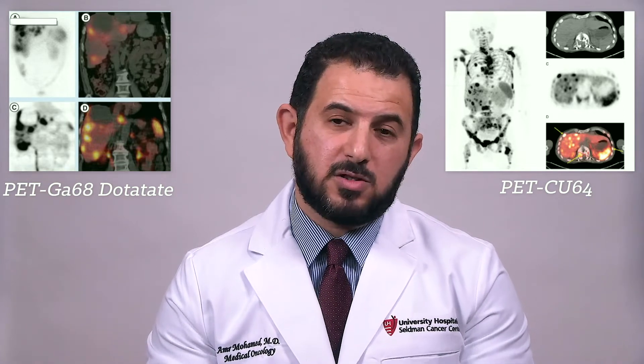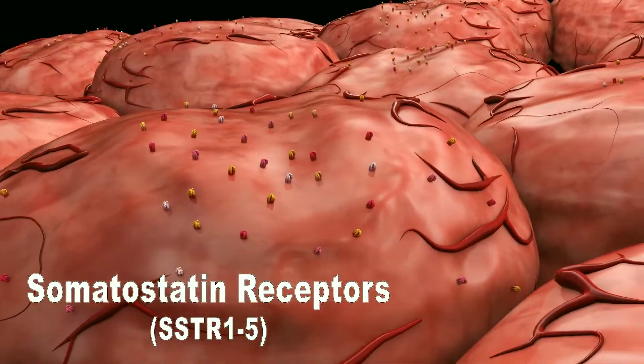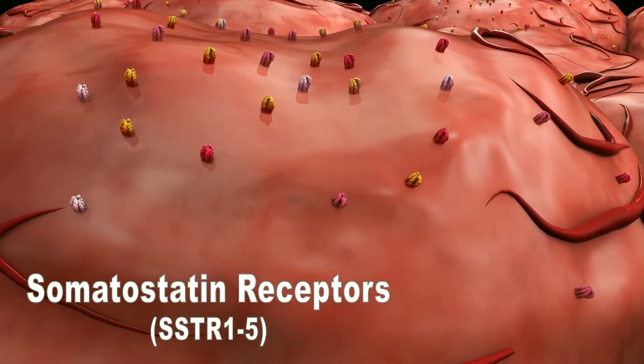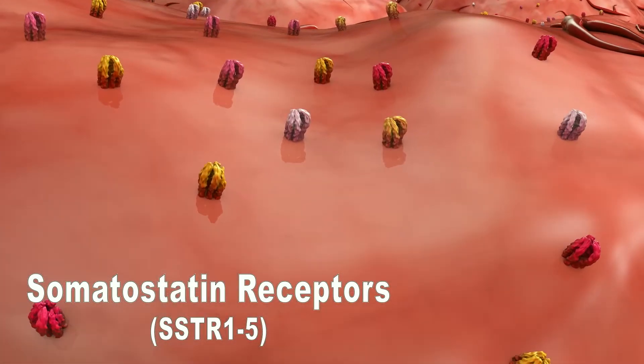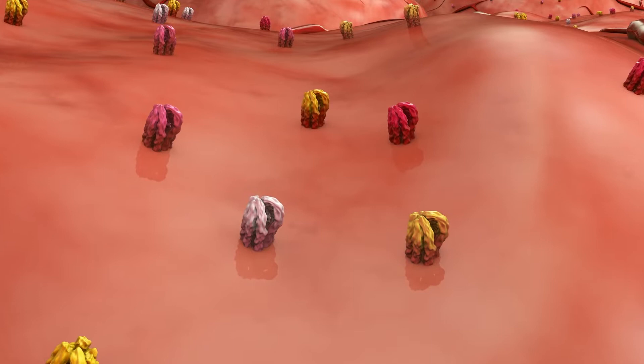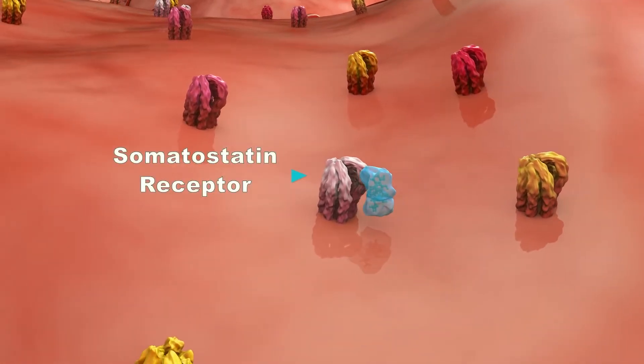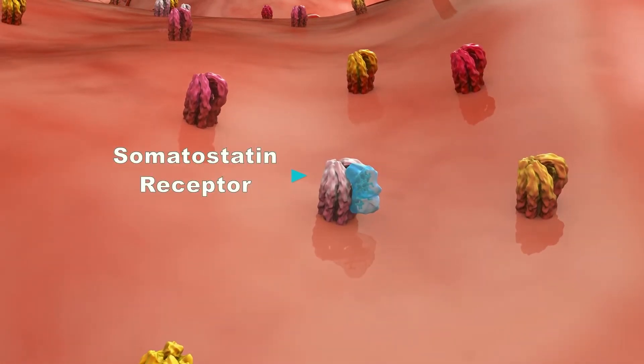The other type of imaging is functional imaging, such as specific PET scans like the PET gallium-68 or the copper-64. These use a specific radiolabeled material to detect specific function on these tumors — what we call the somatostatin receptors on the surface of the neuroendocrine tumors. The test helps us know if you have these receptors, because based on their presence, we have specific treatments we can offer.